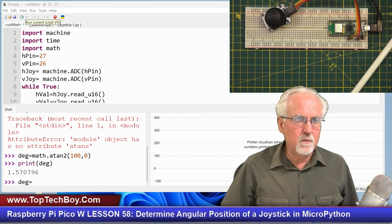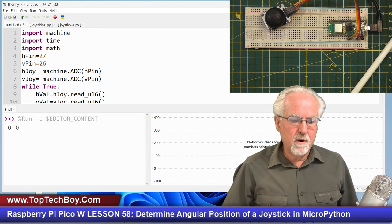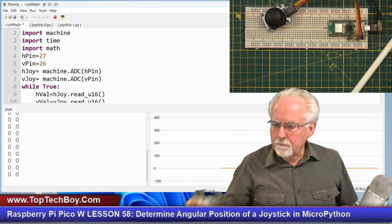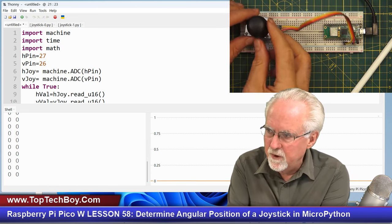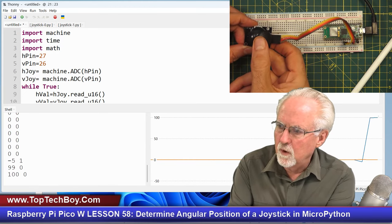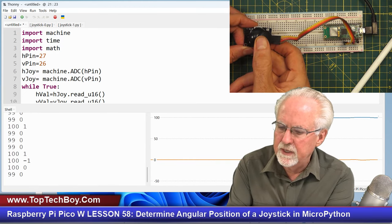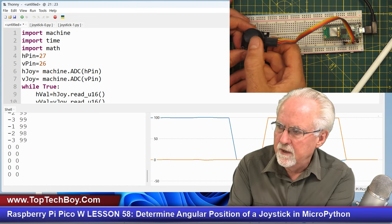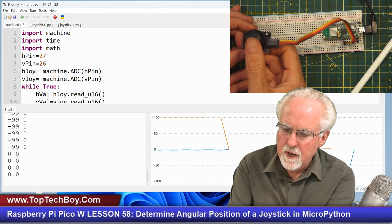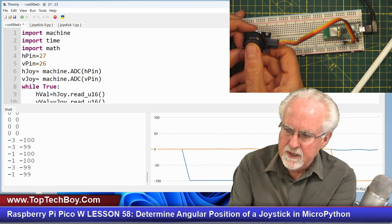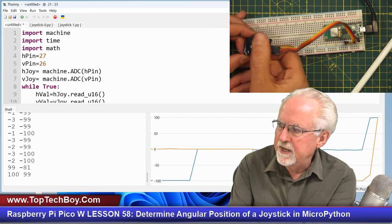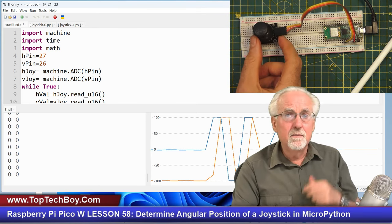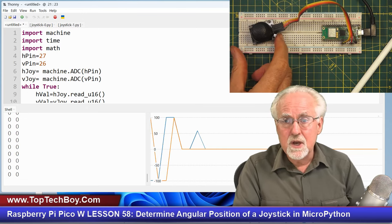We can come over and we can go to Thonny and we can paste that in. Based on the connections that I just showed you and this code, we should be back to where we're getting calibrated X and Y values from the joystick. Let's just try that and see if it works. In the neutral position, we're getting 0, 0. That's good. If I come to the full right position, I'm getting 100 and 0. Full up is 0, 100. Full left is minus 100, 0. Down is 0, minus 100.